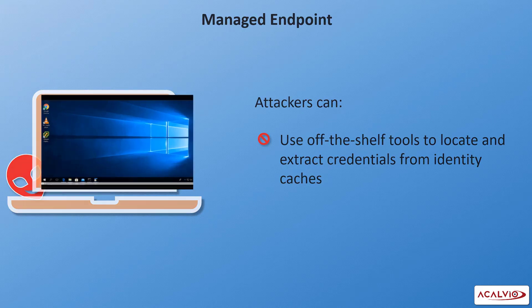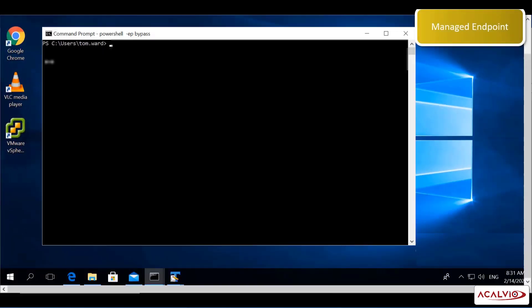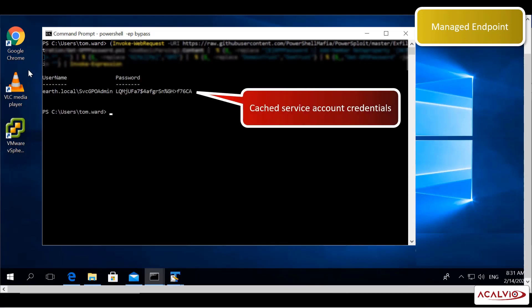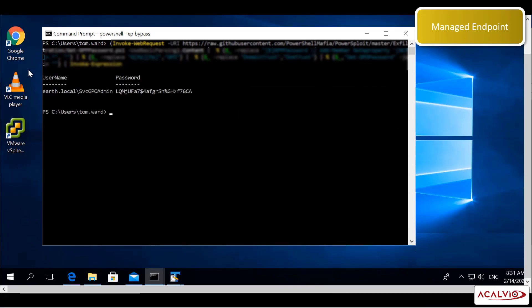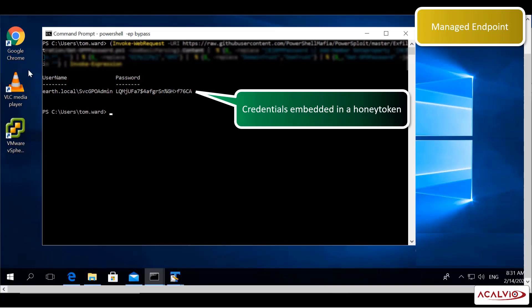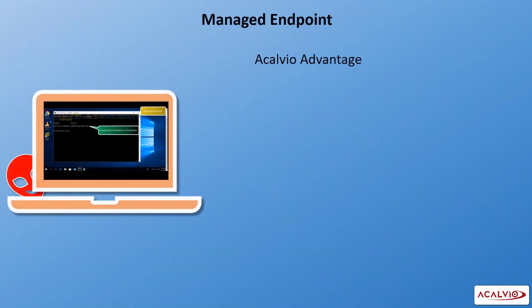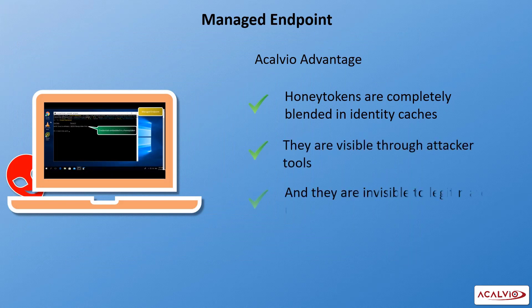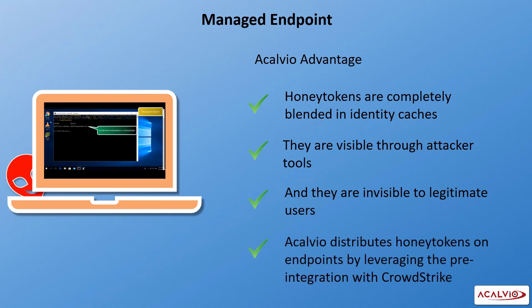An attacker has gained access to this endpoint and is looking for credentials in identity caches. They find cached credentials, not knowing that these are part of a honey token deployed on the endpoint. Honey tokens are completely blended in identity caches — designed to be visible through attacker tools and, at the same time, invisible to legitimate users. Acalvio distributes honey tokens on endpoints by leveraging its pre-integration with CrowdStrike.